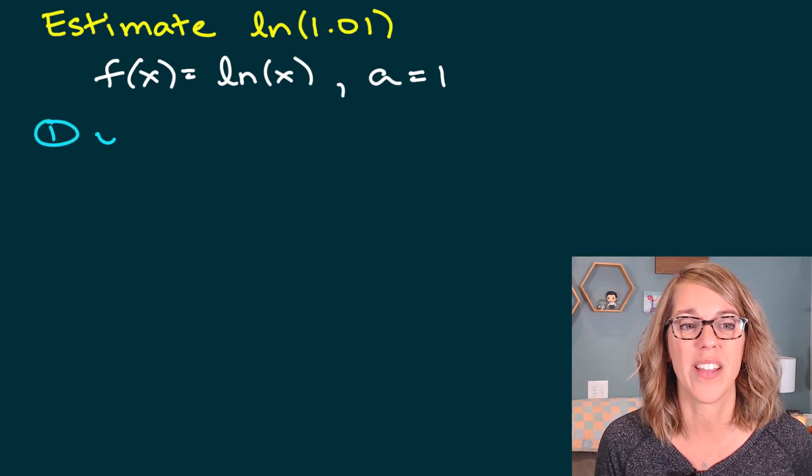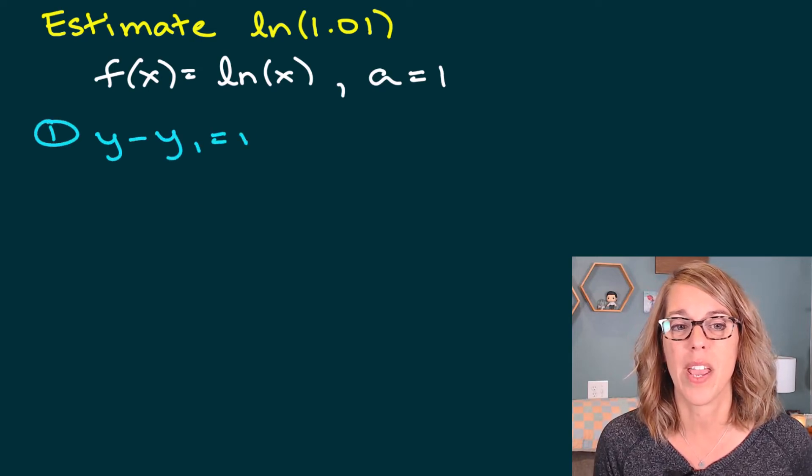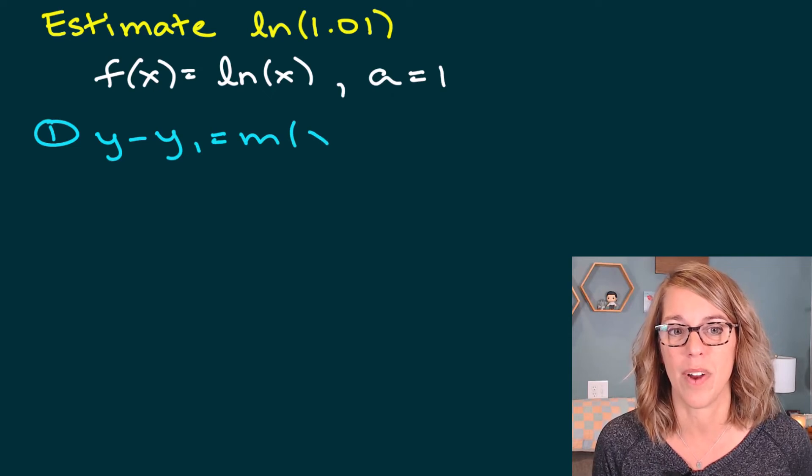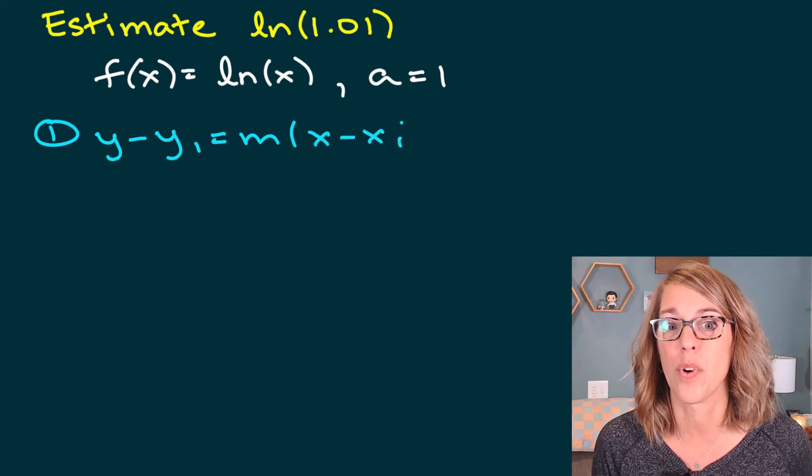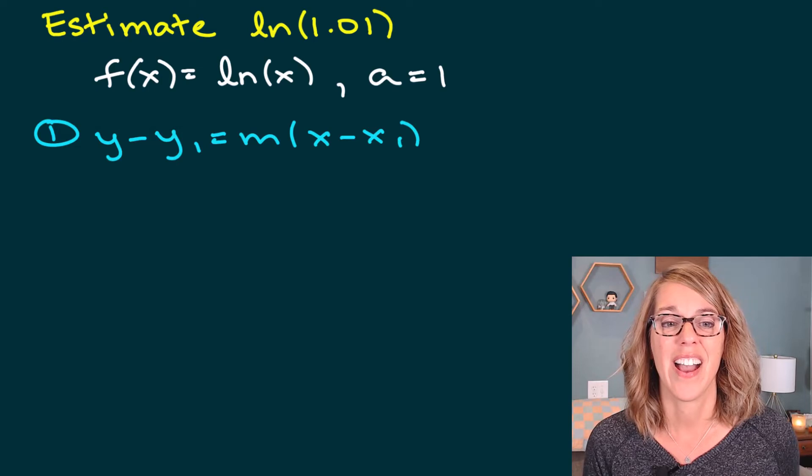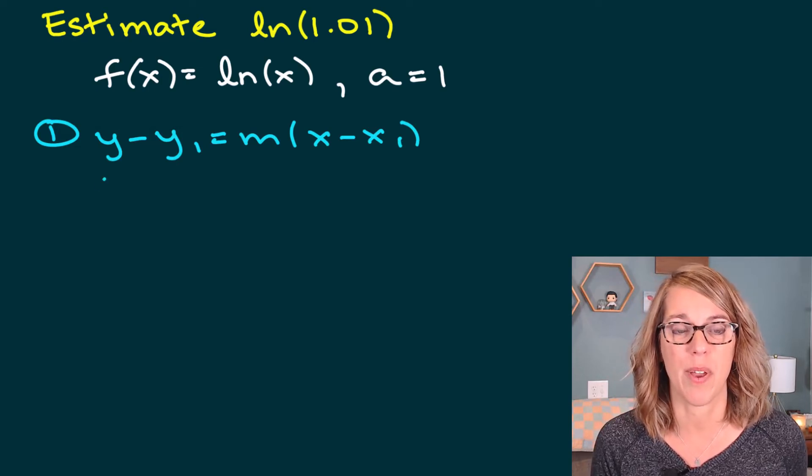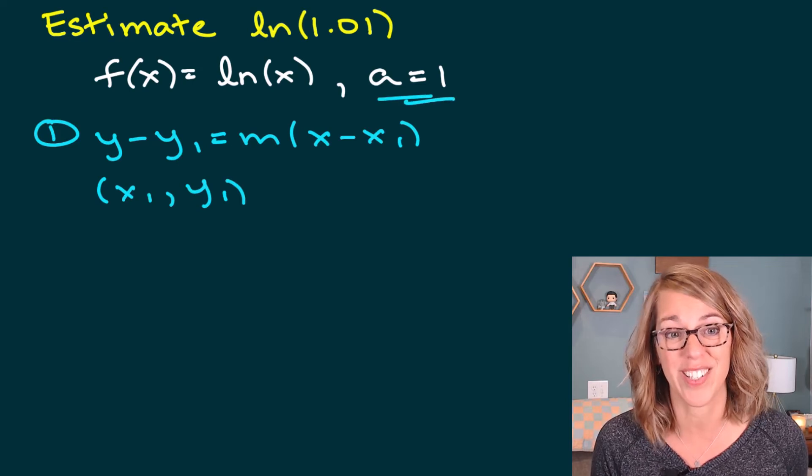Now, as I go through my steps, step number one is to find the equation of my tangent line. I write it this way. Again, you can use that linear approximation formula—both work just great. I need first my x₁ and my y₁.